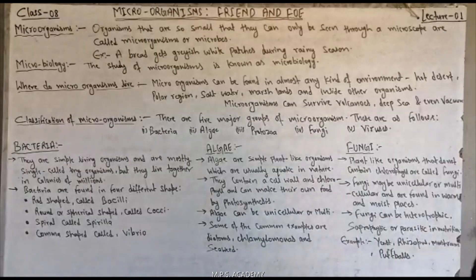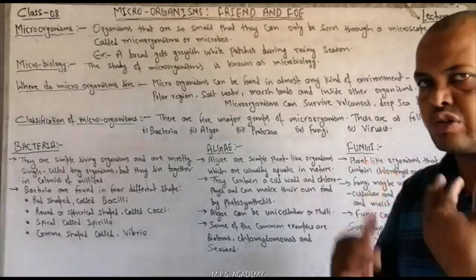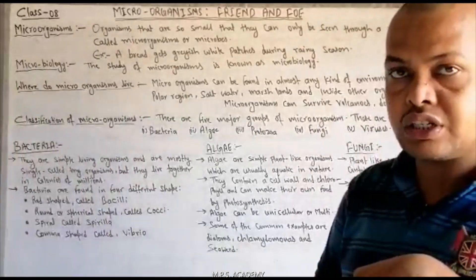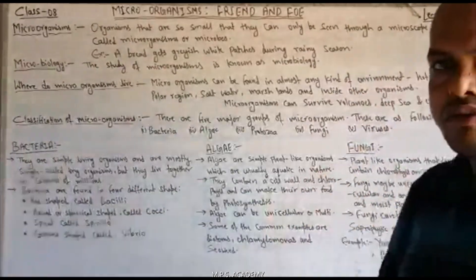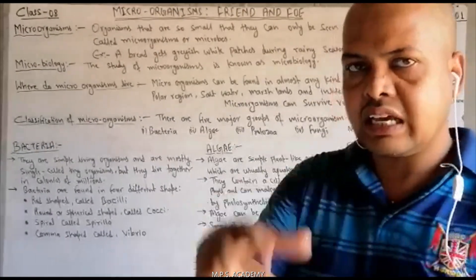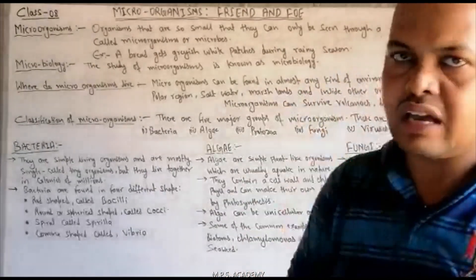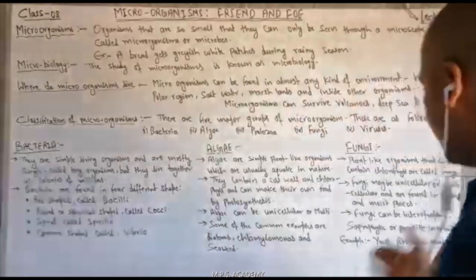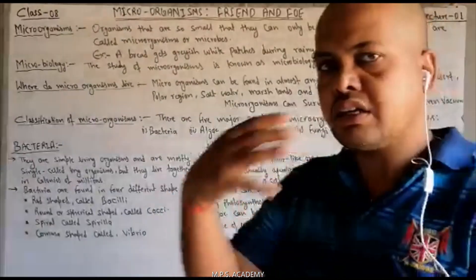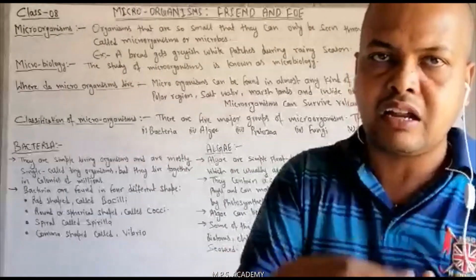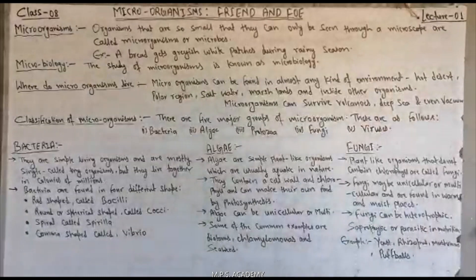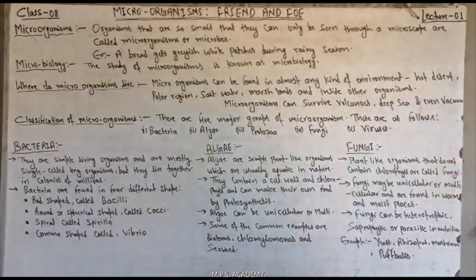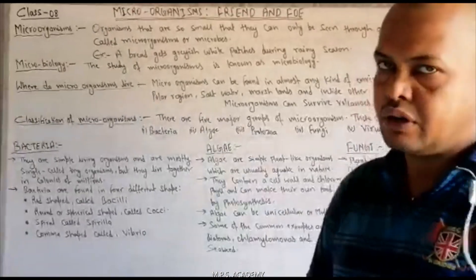Heterotrophic nutrition kya hota hai? Aisa nutrition jis mein koi organism apna nutrition ke liye doosare par depend hota hai, woh heterotrophic kehlaata hai. Saprophytic mode of nutrition mein organism sade-gale substance se nutrition prapt karta hai. Parasitic mein organism host body ke upar aakar, host body mein milne wale nutrition ko gain karta hai. Fungi ke examples hain: yeast, Rhizopus, mushroom, aur puffball.